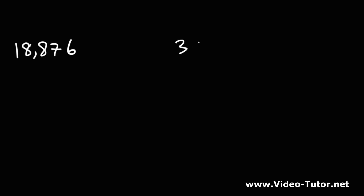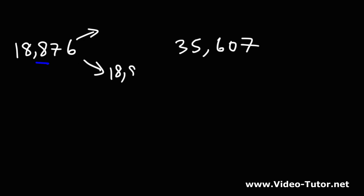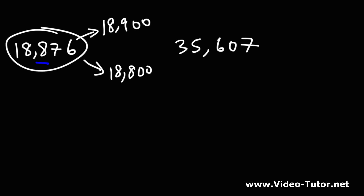Let's consider two more examples: 18,876 and 35,607. Round those two numbers to the nearest hundred. For 18,876, we know the last two digits are going to be a zero, and we want to round the hundreds digit either up to a nine or keep it an eight. So the two possibilities are 18,800 or 18,900. Looking at the digit in the tens place, seven is part of the five or more group, so we're going to round it up to 18,900.